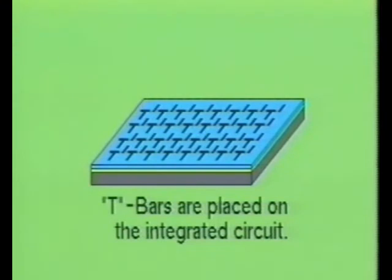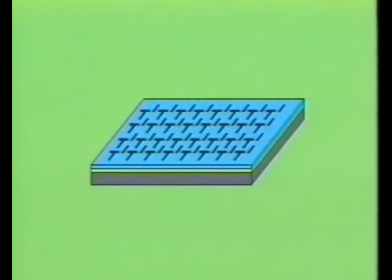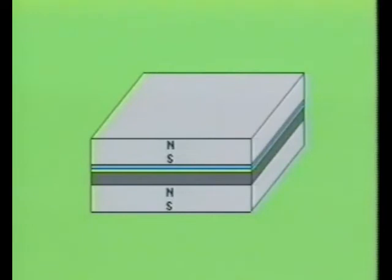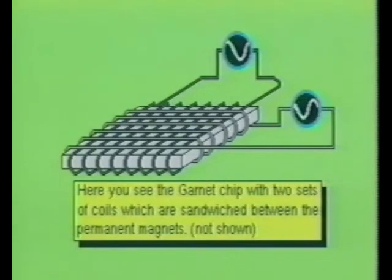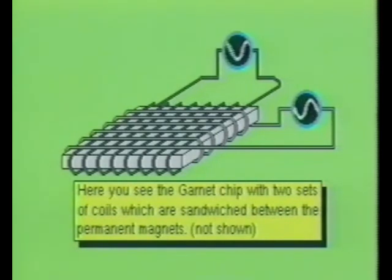Then a pattern of permanent magnetic material is deposited on the silicon oxide. The pattern resembles that of a T and bar configuration. Next, the chip is sandwiched between two permanent magnets, which provide a field that points the opposite way from the bubbles. This causes the bubbles to form in the garnet material. The bubbles are moved by applying an additional rotating magnetic field that is parallel to the plane of the film, generated by two coils perpendicular to each other carrying sine wave or triangular wave currents that are 90 degrees out of phase with each other.